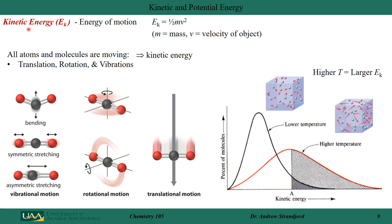Chemicals also have energy in the form of kinetic energy, represented by capital E sub K. Kinetic energy is the energy of motion, and the formula is one half times mass times velocity squared. All atoms and molecules are moving, so if they're moving with some velocity they contain kinetic energy — most often in the form of translations, rotations, or vibrations.